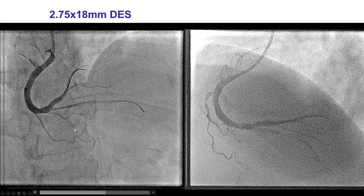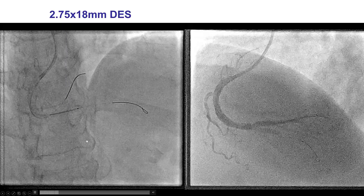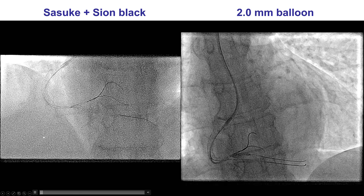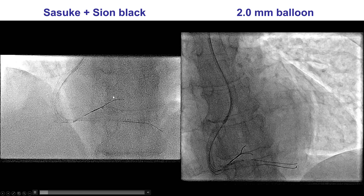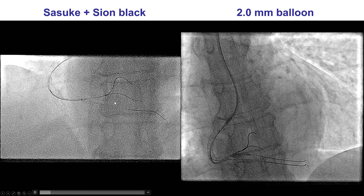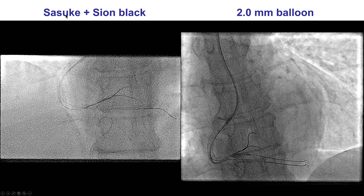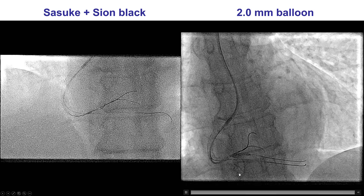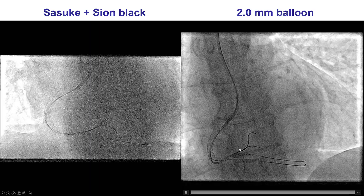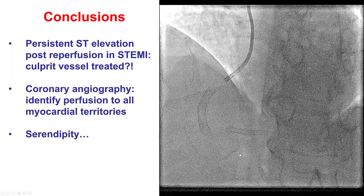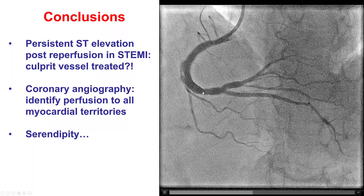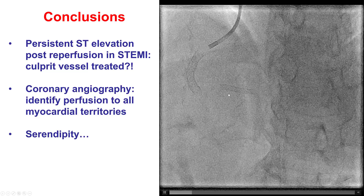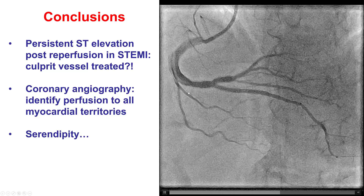We placed a drug-eluting stent across the origin of the posterior descending artery, and then we were able to wire with difficulty the right posterior lateral branch using a dual-lumen microcatheter — a Suzuki — and then performed balloon dilatation with a 2.0 mm balloon. That provided a nice final result with TIMI flow in both the PDA as well as the right posterior lateral branch.